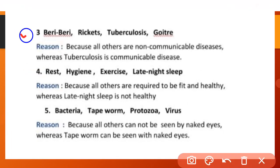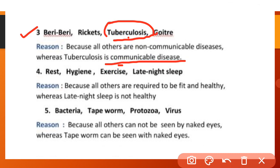(3) Beriberi, tuberculosis and goitre — Tuberculosis (TB) is the odd one out because TB is a communicable disease, whereas all others (beriberi, goitre) are non-communicable diseases. (4) Late night sleep is the odd one out because rest, hygiene and exercise are all required to stay fit and healthy, while late night sleep is not healthy.